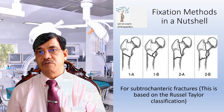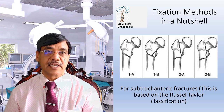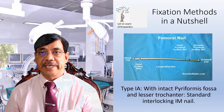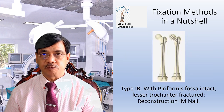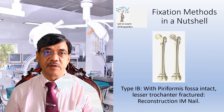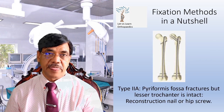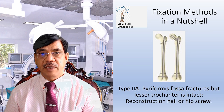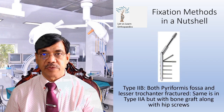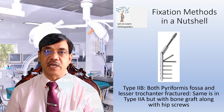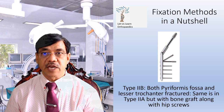To summarize fixation methods based on the Russell-Taylor classification: Type 1A with intact piriformis fossa and lesser trochanter — standard interlocking intramedullary nail. Type 1B with piriformis fossa intact but lesser trochanter fractured — recon intramedullary nail. Type 2A with piriformis fossa fractured but lesser trochanter intact — recon nail or hip screw. Type 2B with both piriformis fossa and lesser trochanter fractured — same as Type 2A but with bone graft and hip screws.